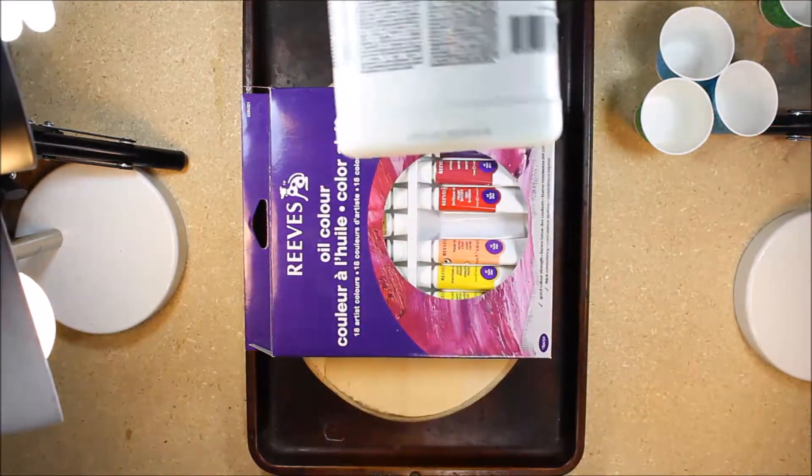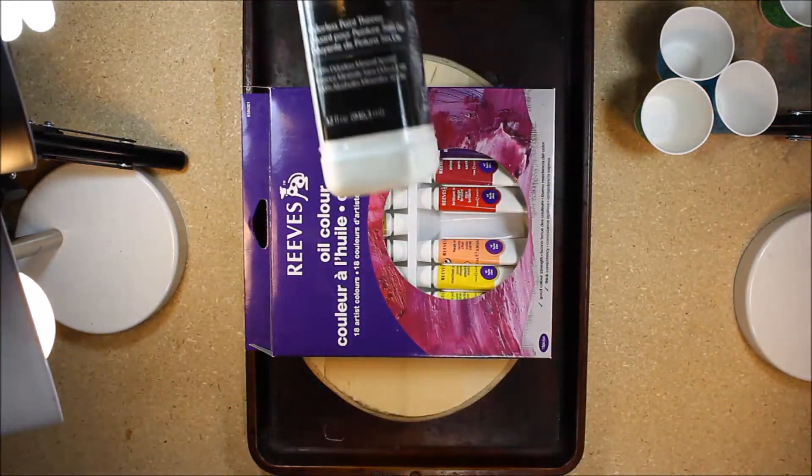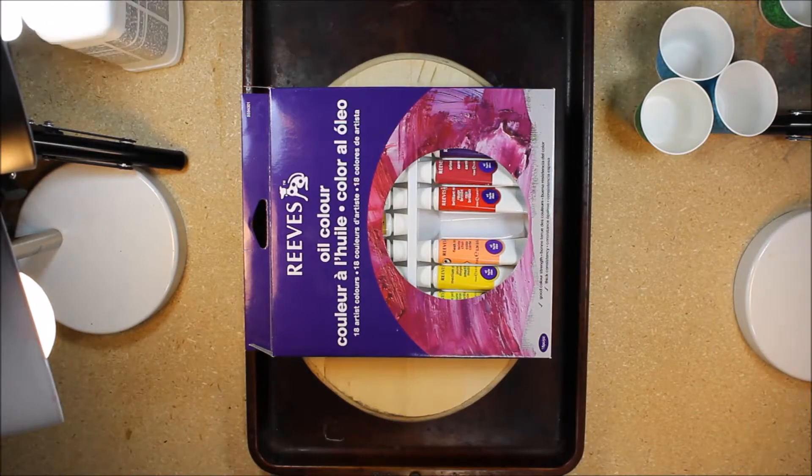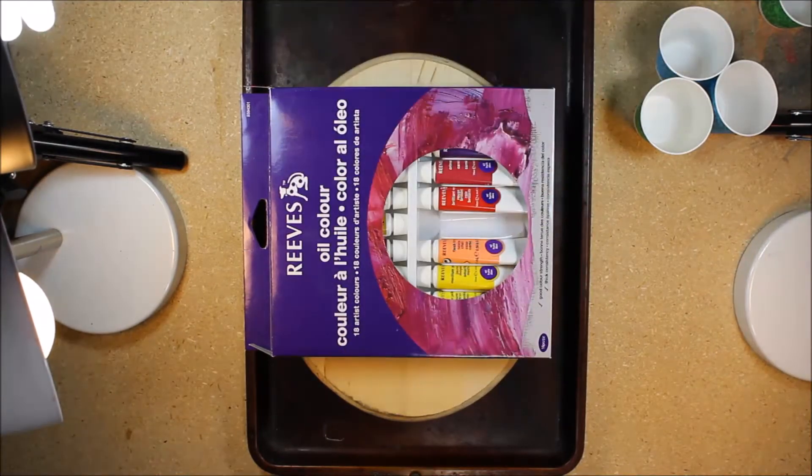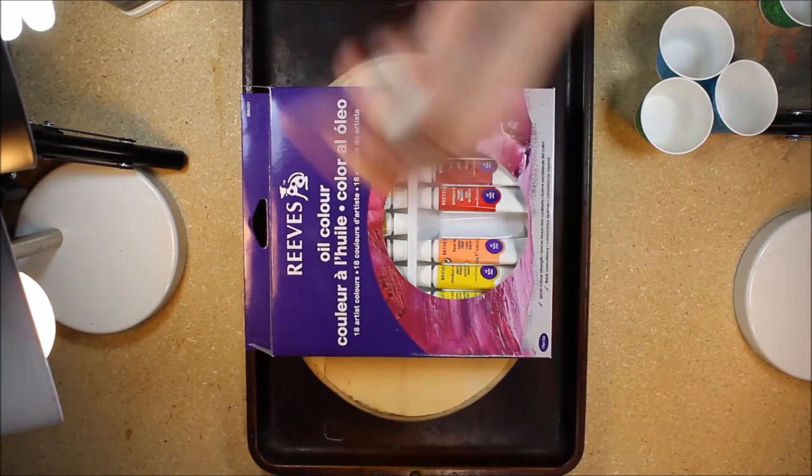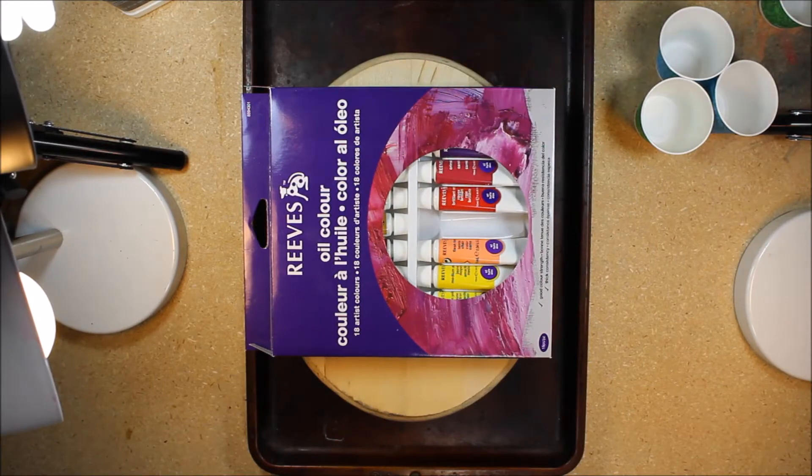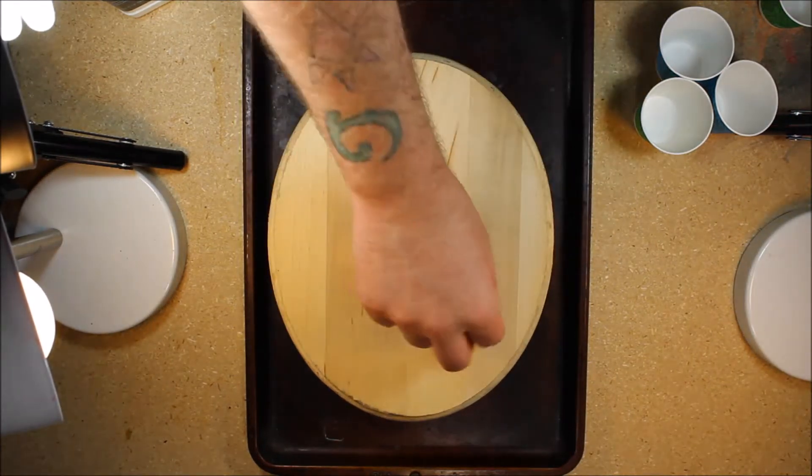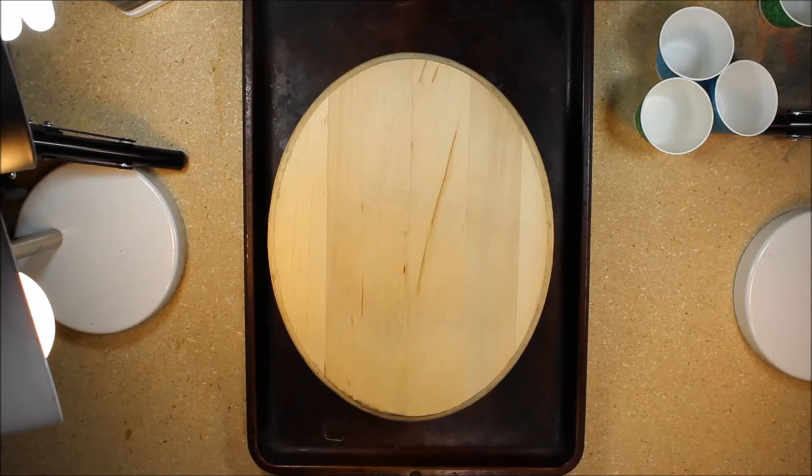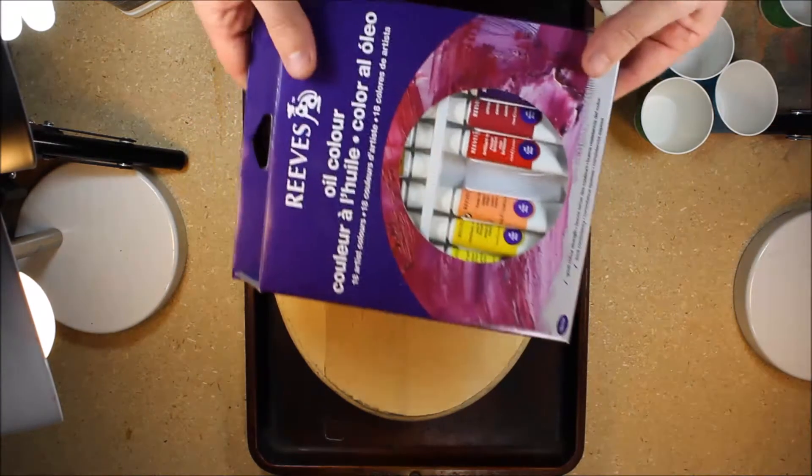I've got some linseed oil which is used for thinning the oil paints, which I will use sparingly combined with the yolks of the eggs to mix with the oil paints. This should give us a fast drying, at least for oil paints, a fast drying oil paint that we can use in a pour painting style.